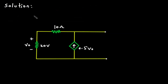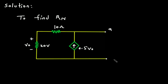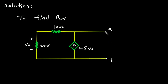To find the Norton equivalent we have to find Rn and In. To find Rn we will short circuit the terminal — let's say this is terminal A and this is terminal B. So we will short circuit terminals A and B. Here we can see that there is no independent source, so instead of short circuiting terminals A and B we will consider a 1V voltage source here. Let's say this is positive and this is negative — this will be 1V.